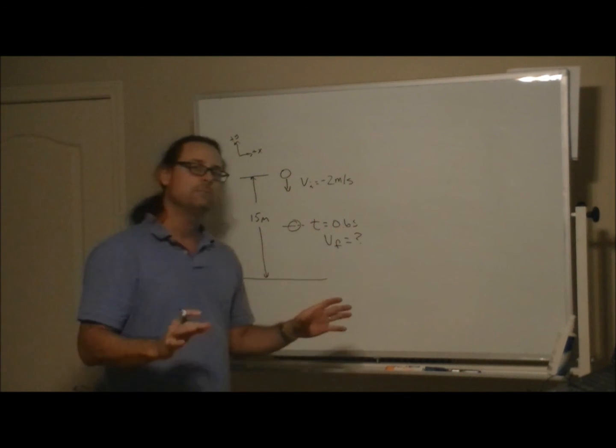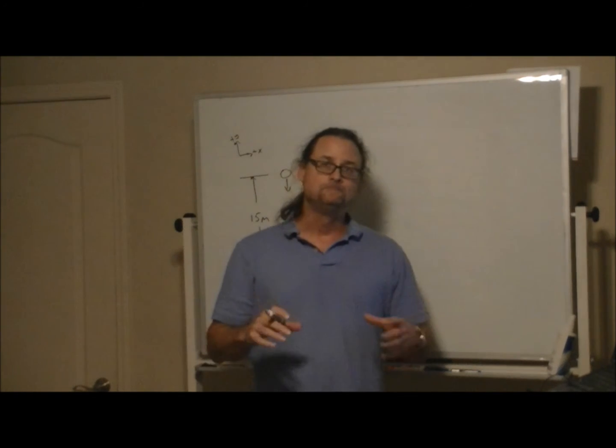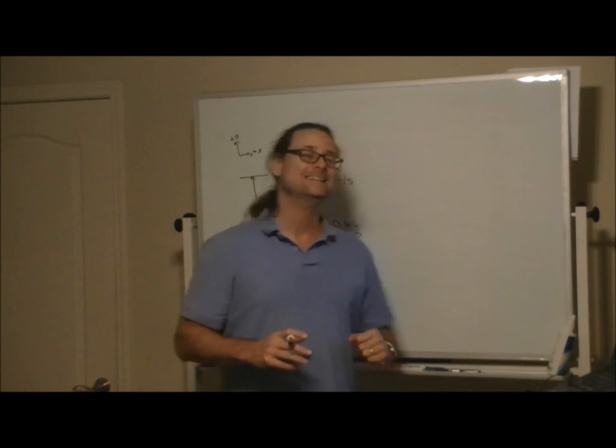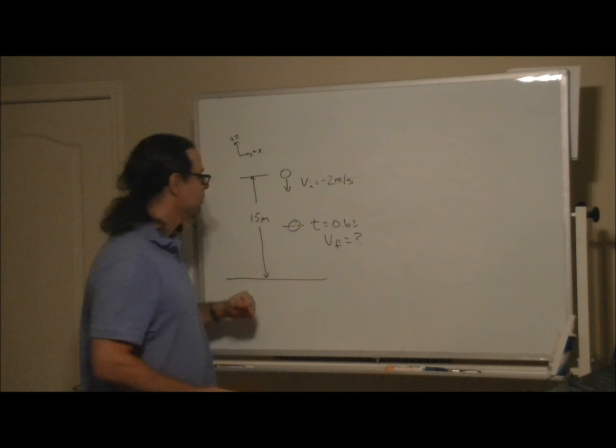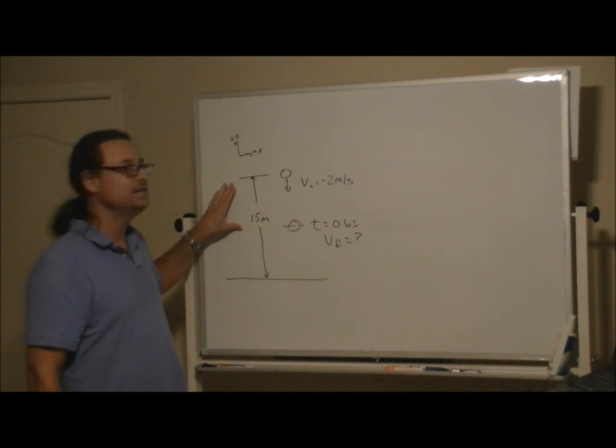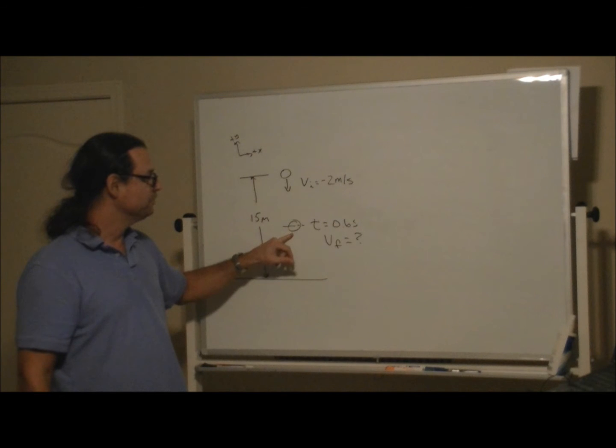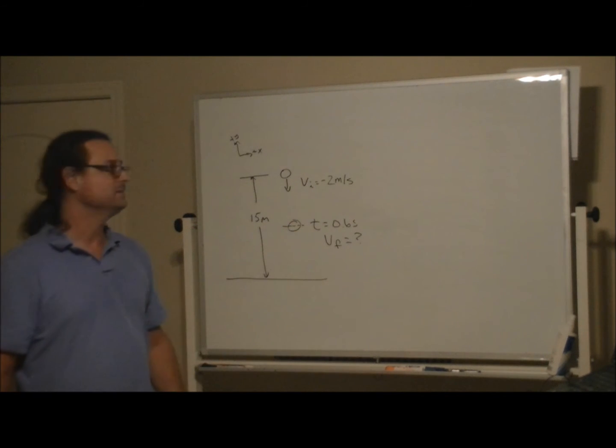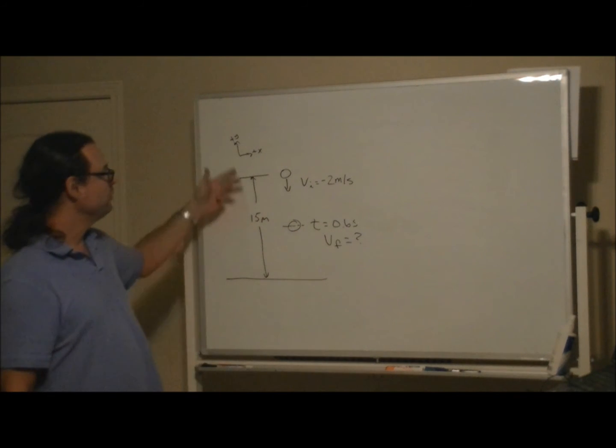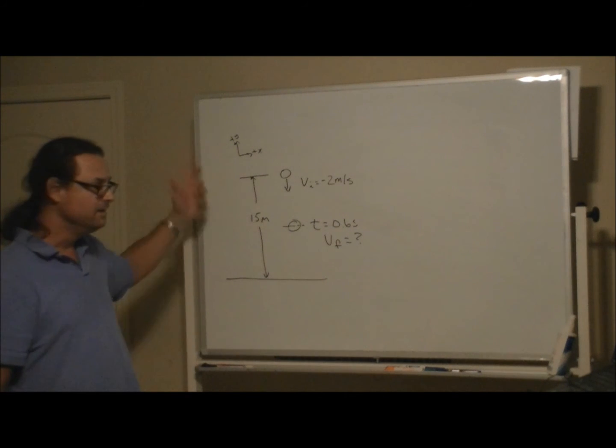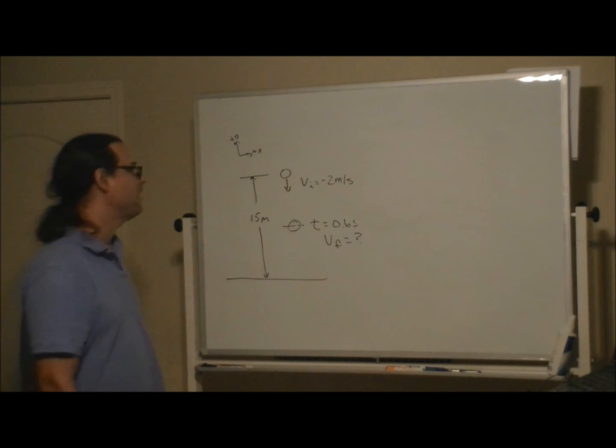This is an example of a physics problem that gives extraneous information that you don't really need. As long as it's high enough not to hit the ground, it doesn't really matter how high it is. You're not asked for the speed when it hits the ground, you're only asked for the speed 0.6 seconds later. You could be 100 meters high, 200 meters high - ignoring wind resistance, it doesn't matter how high you are.